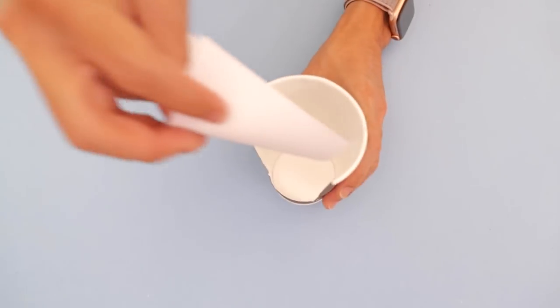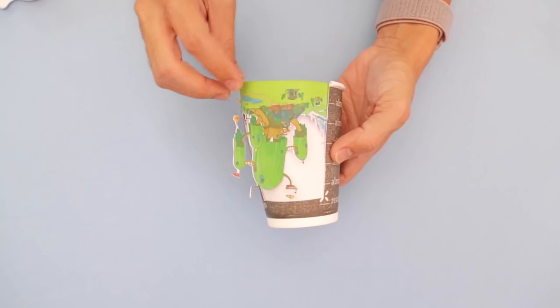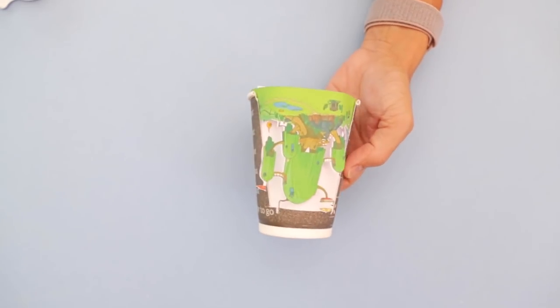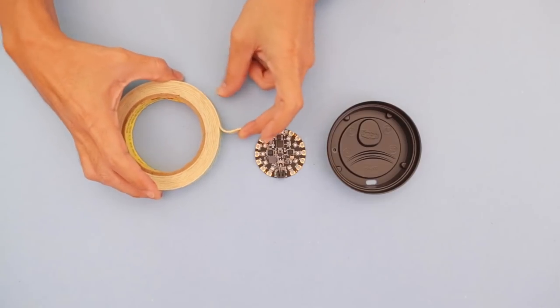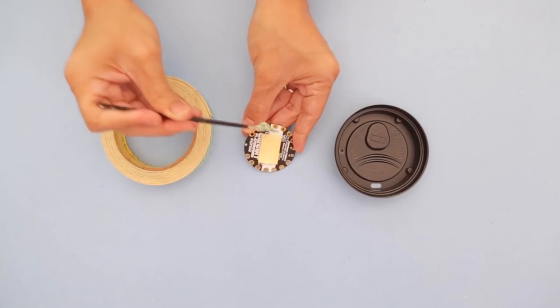Tape the paper window inside and place your assets however you want. You can give it that 3D effect by making things pop out. Stick the Circuit Playground Express to the cup's lid using double stick foam tape.